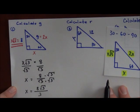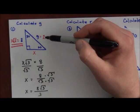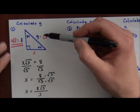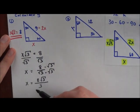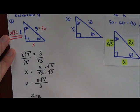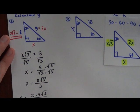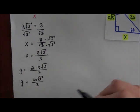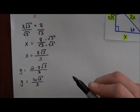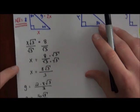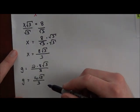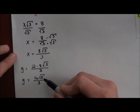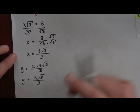Now that X = 8√3/3, and G = 2X, I multiply: G = 2 × (8√3/3). Two times 8 is 16, so G = 16√3/3. It's not a clean number, but the problem is solved — G has been calculated. If you want a decimal approximation, you can multiply it out, but we'll leave it as an exact value here.